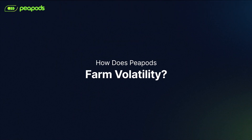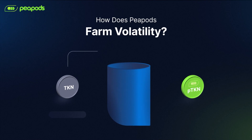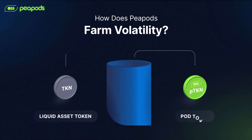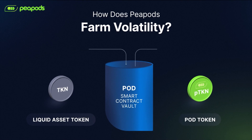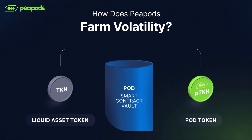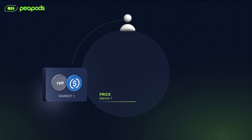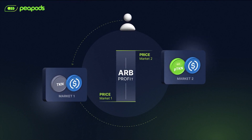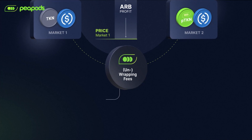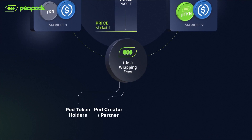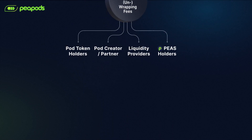How does P-PODs farm volatility? For volatility farming, P-PODs intentionally creates arbitrage opportunities by allowing users to wrap assets into smart contract vaults known as pods. Arbitrage can then occur between trading pools of potted tokens and the pod token. The P-PODs protocol charges a small fee for the arbitrage path to be completed, and those fees fuel the sustainable real yield paid out to stakeholders.